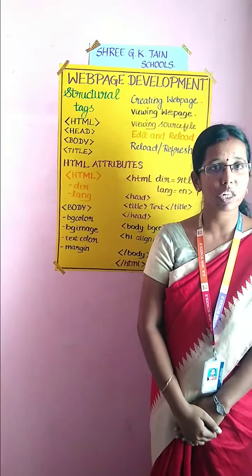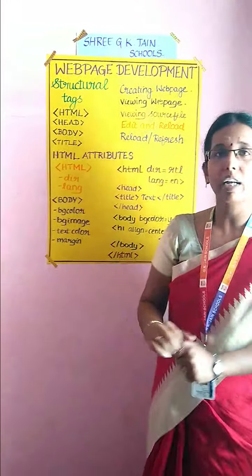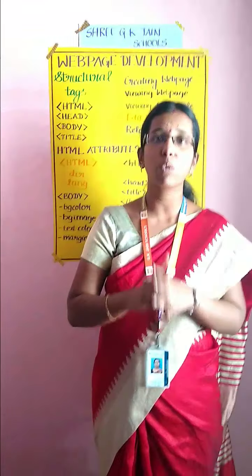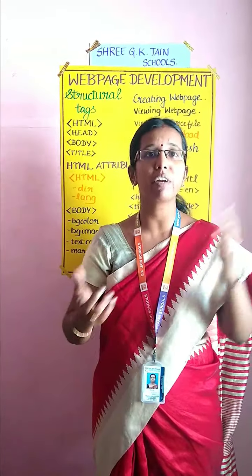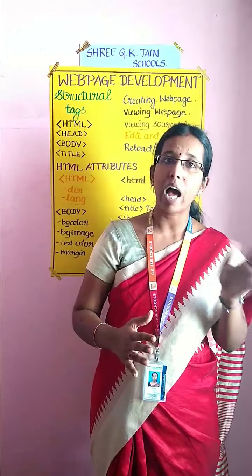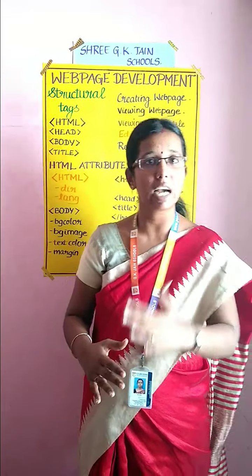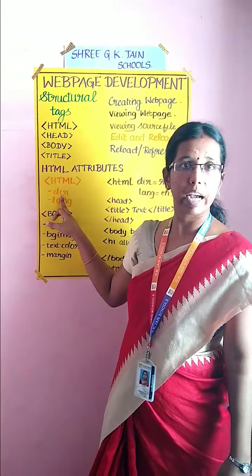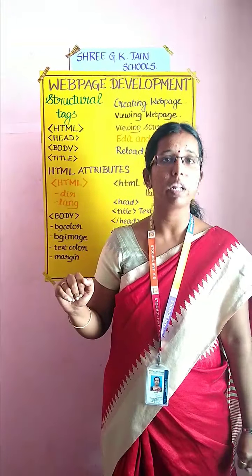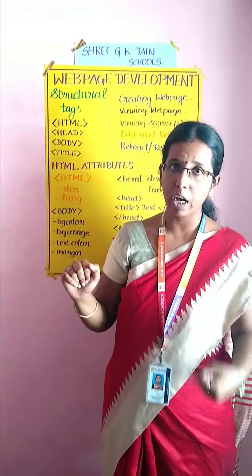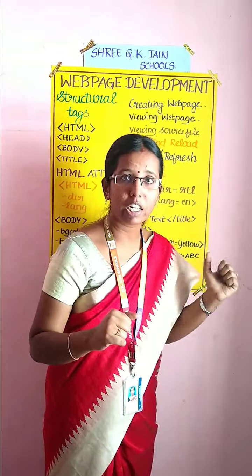The first attribute is your HTML attributes. You will have two attributes in the HTML tag: one is DIR and another one is LANG. DIR is nothing but the direction of the text to be aligned. For example, if you want the text to be aligned from right to left, you have to give it as RTL. If you want the text aligned from left to right, you give it as LTR. LANG is nothing but the language specified in the document. If you are writing your HTML code in English, you give it as EN, which is the default language.